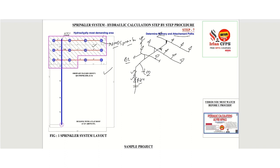Now what we need to do is determine the primary path and the attachment paths. First of all, the hydraulically most demanding sprinkler is this one. So now I will define the primary path and attachment path definitions, then we will look into the nodding. Primary path is the path that the water takes from the water supply to the remotest sprinkler or single most demanding sprinkler.